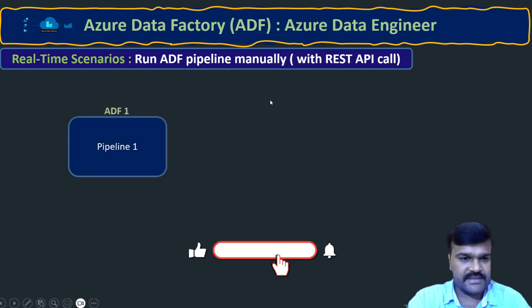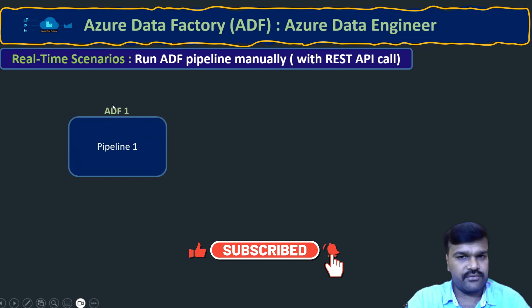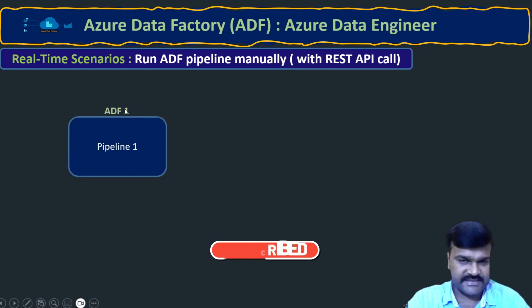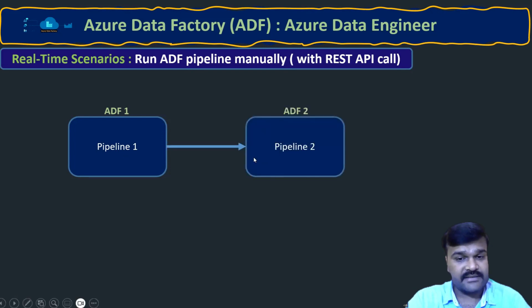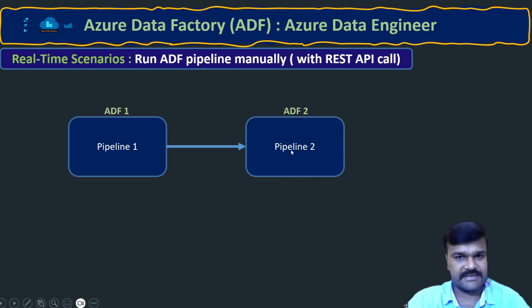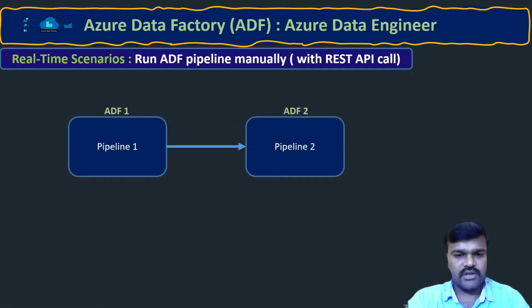We have one existing ADF — let's call it ADF One — and inside it there is Pipeline One. That pipeline will be calling another pipeline which exists in a separate, second Azure Data Factory. This is the scenario we are trying to implement.